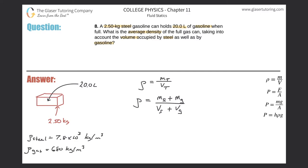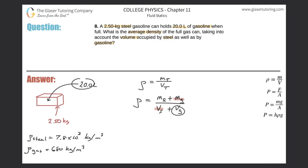Then we divide by the volume of the steel plus the volume of the gas. What I realize I don't know in this equation: I don't know the mass of the gasoline, and I don't know the volume of the steel. I do know the mass of the steel — they told us — and I do know the volume of the gasoline — they told us. So my objective is to find the volume of the steel.